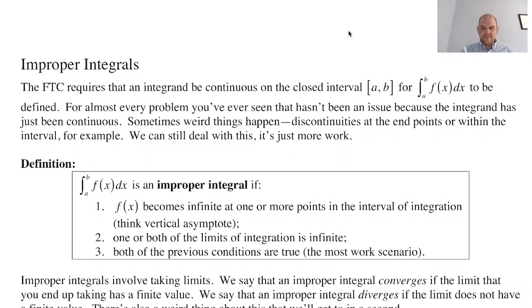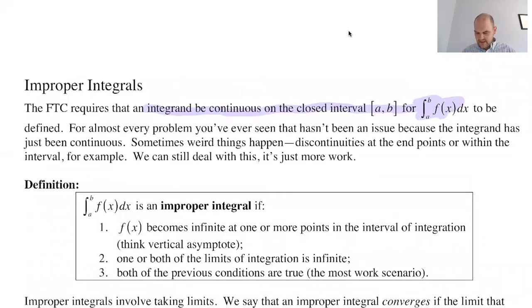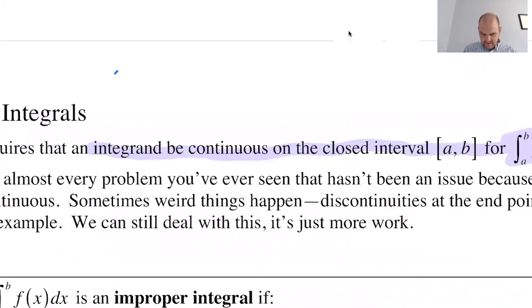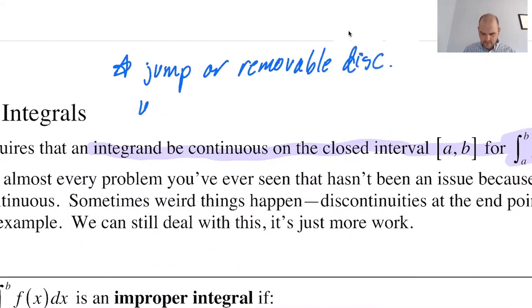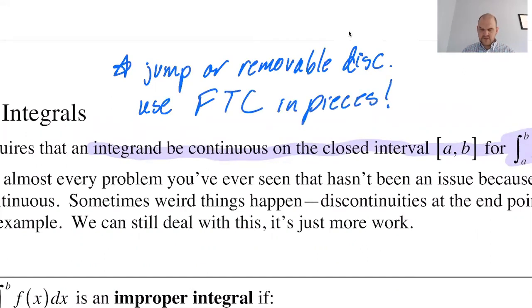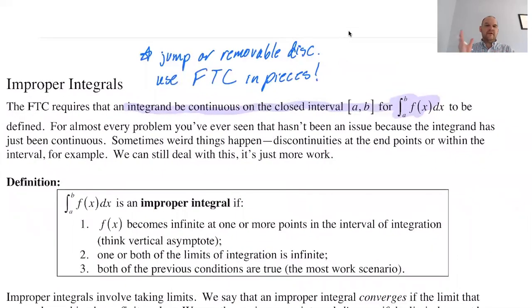So, improper integrals — what is this all about? The fundamental theorem, when you use it, actually requires the integrand to be continuous on the interval from a to b, and almost every problem you've seen until now has involved that. The one disclaimer is that if you have a jump or a removable discontinuity, you can still use the FTC — you just use it piecewise. You do one part to the left of the jump or removal discontinuity, then another integral to the right. That's not a big deal.